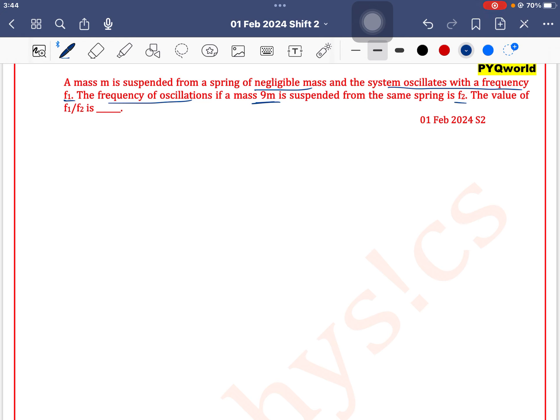Now we know that for a spring-mass system, the frequency of oscillation is given as f = (1/2π)√(k/m). So frequency is inversely proportional to √m.